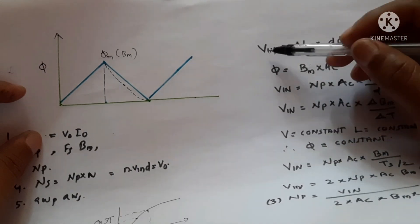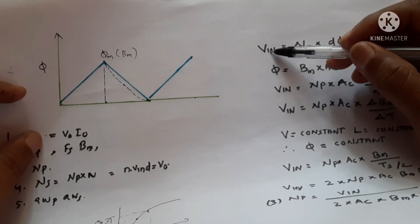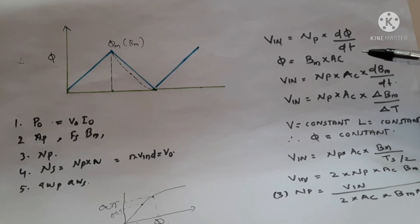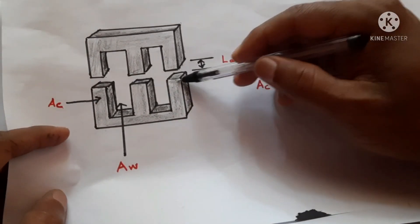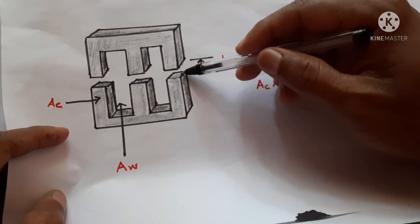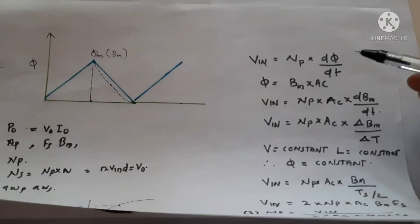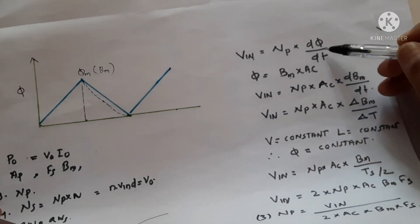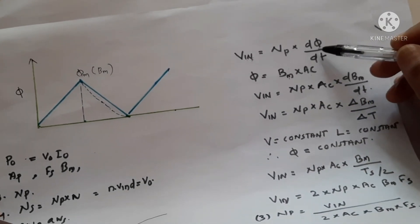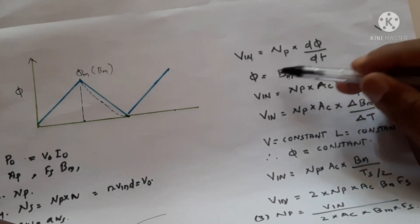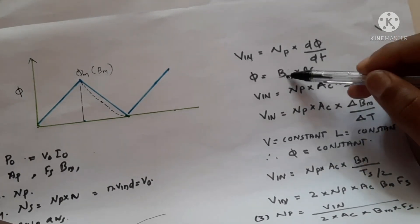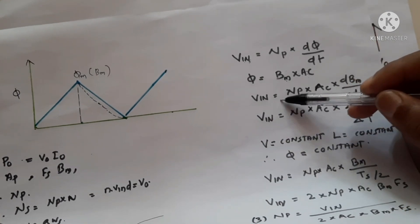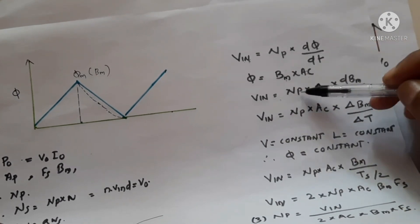The voltage is around 320 volts and Ac is the core area, which we can measure. Since flux φ equals Bm times Ac, we can replace φ with Bm times Ac. So the equation now becomes: Vn equals Np times d(Bm·Ac)/dt.